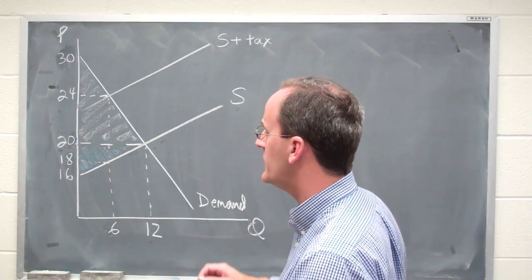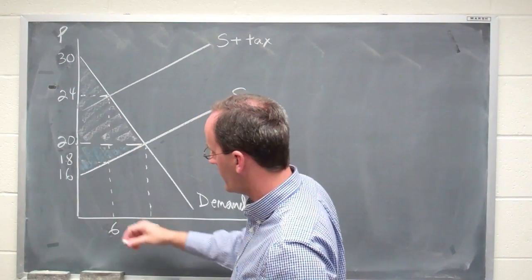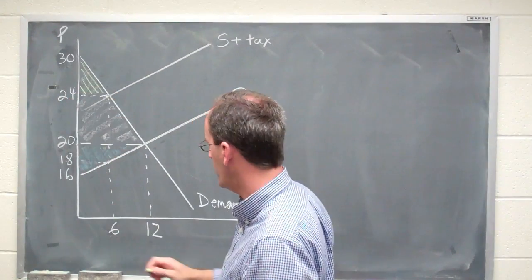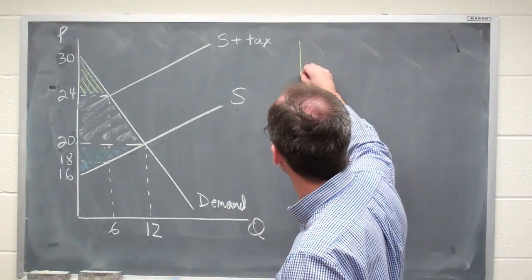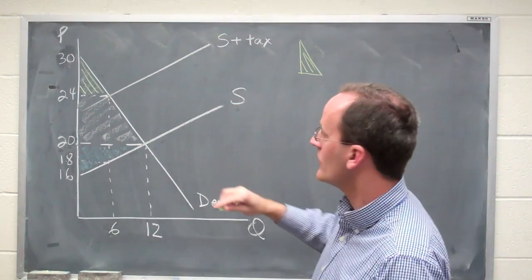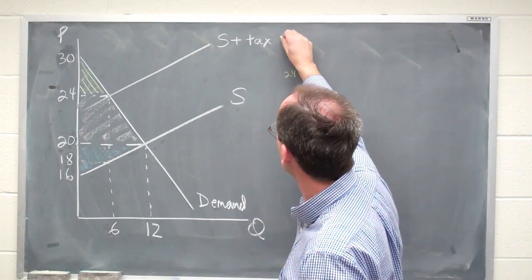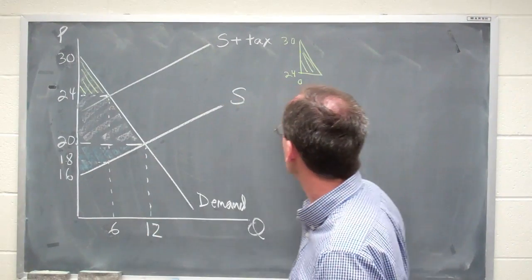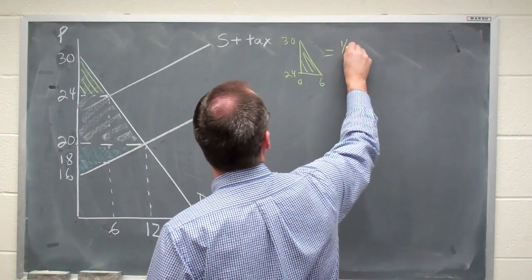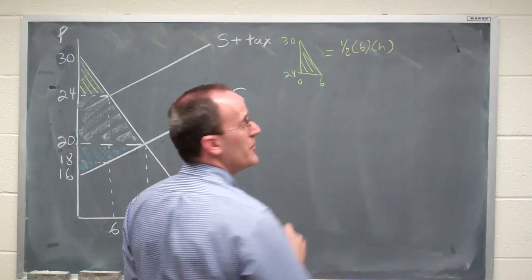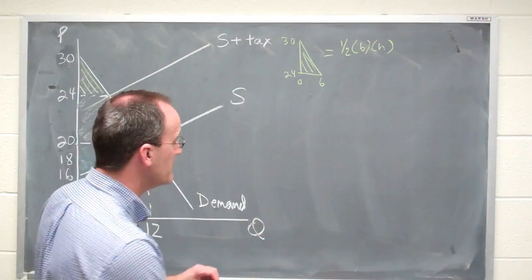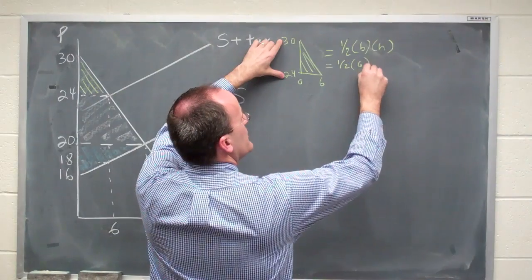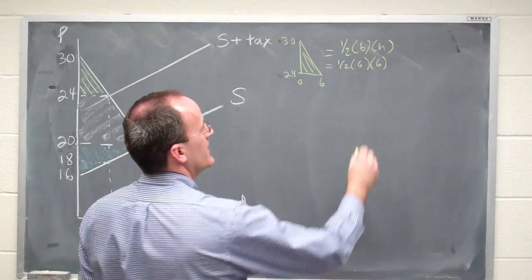Let's go about doing that. In this particular case, the price rises to $24, so consumers after the tax get this area up here under the demand curve and above the new price. Let's figure out what that area looks like. It starts at 24 and rises to 30, and along the x-axis it starts at zero and goes out to six. That's a triangle. We can use one half the base times the height of the triangle to figure out the area. The height here is six and the base is also six. So we got one half of six times six. One half of 36 is 18.